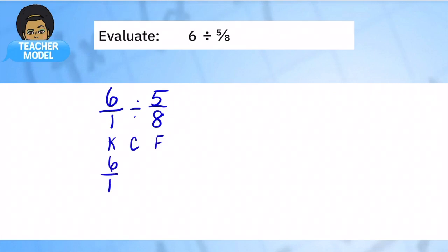Keep the first number, change it to multiplication. Flip this fraction around through a reciprocal, 5 over 8. You get 48 over 5. Now, it is improper. So you're going to have to divide again.